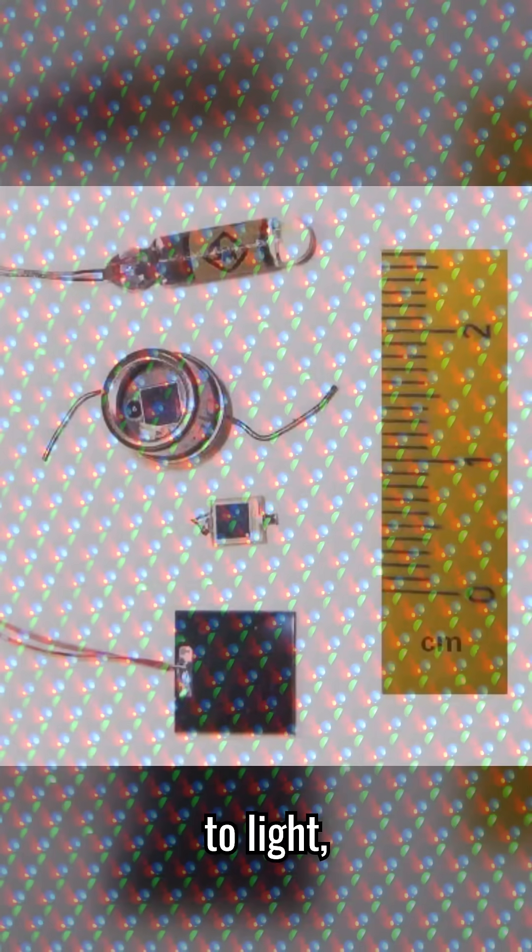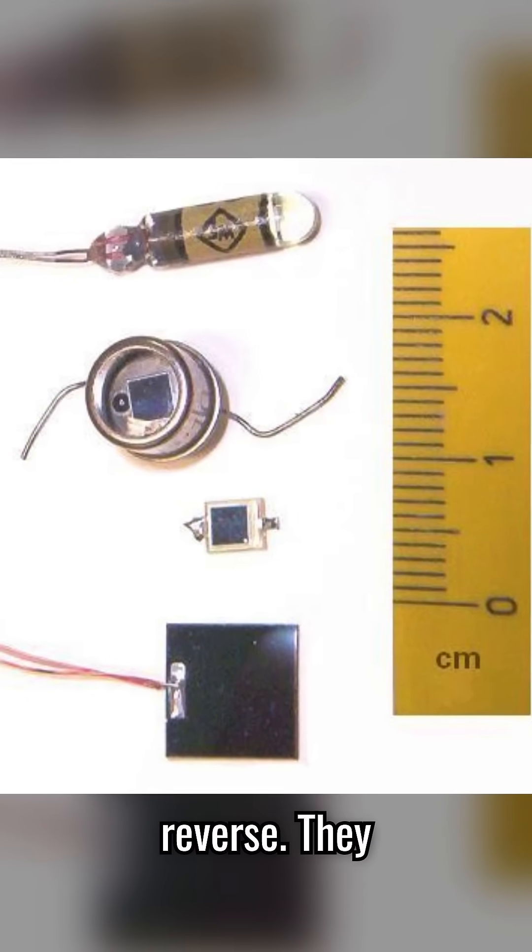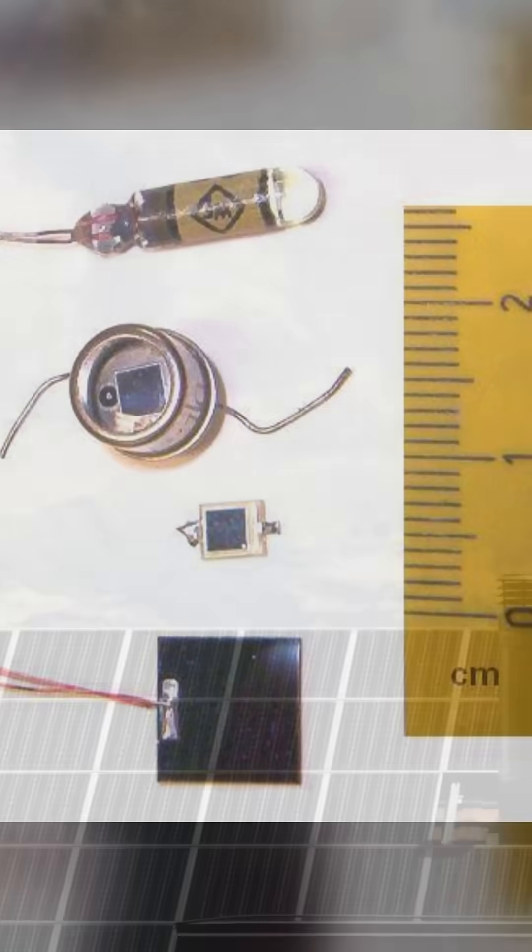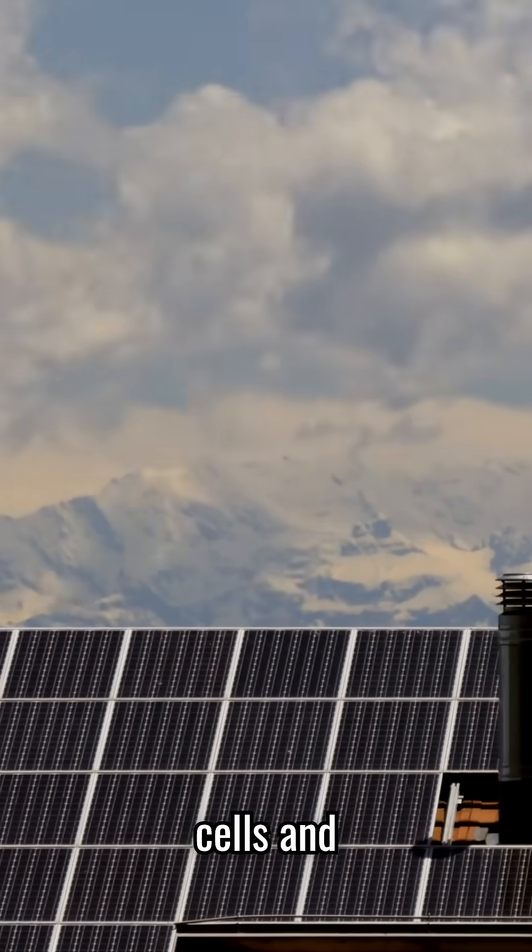When exposed to light, photodiodes work in reverse. They generate a small current. This is the principle behind solar cells and light sensors.